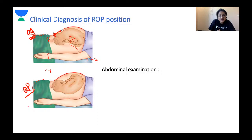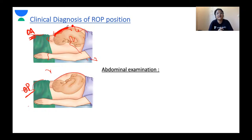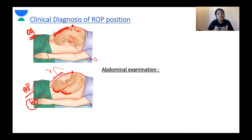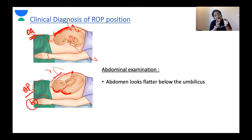On abdominal examination in ROP, the abdomen below the umbilicus looks flatter compared to an occipito-anterior position. The limbs will be more easily felt near the midline on either side because the back is more towards the flank of the woman. Since the fetal heart sound is transmitted across the back of the fetus, in occipito-posterior positions the fetal heart sound is heard with maximum intensity over the flanks — on the right side for ROP, on the left for LOP.